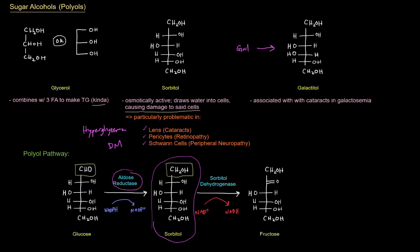This same enzyme is used here to produce galactatol. And if that builds up, it can build up in the lens associated with cataracts in galactosemia. Because in galactosemia, there's high concentration of galactose. So those are some sugar alcohols to be familiar with.